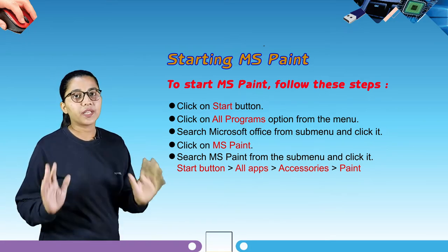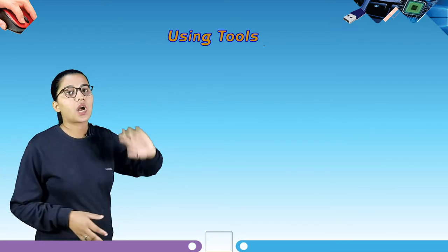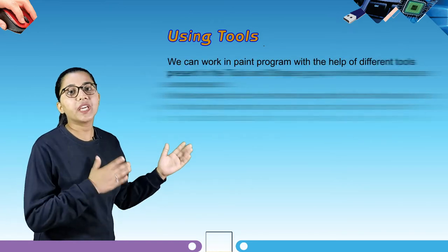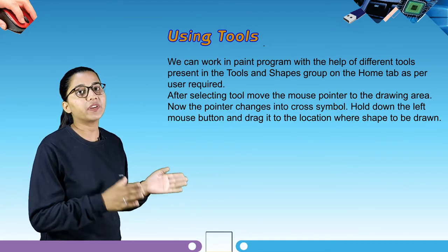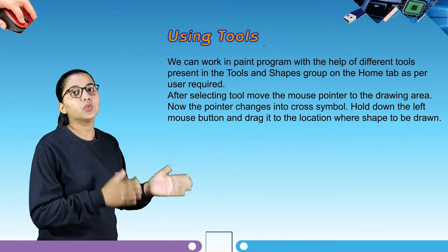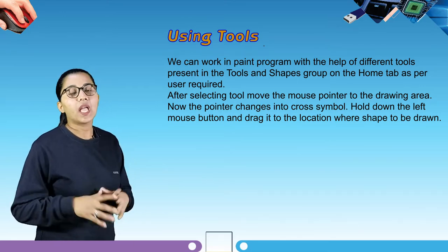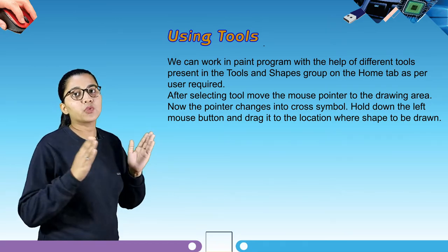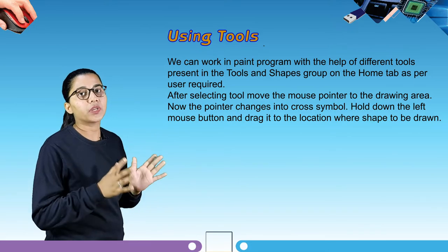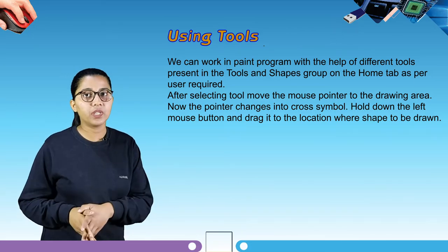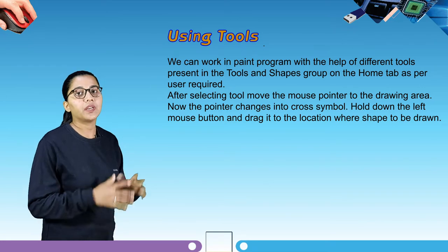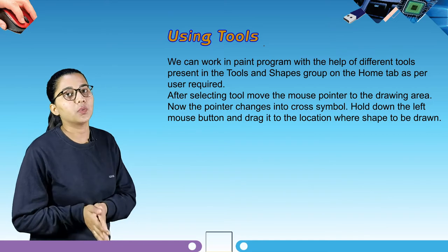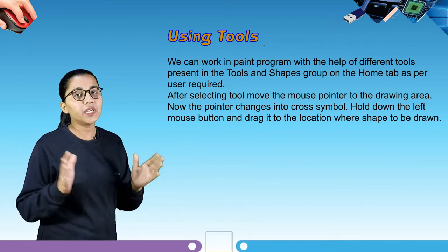Our next topic is using tools. We can work in the Paint program with the help of different tools present in the tools and shape group on the home tab. After selecting a tool, move the mouse pointer to the drawing area. The pointer changes into a cross symbol. Hold down the left mouse button and drag it to the location where the shape is to be drawn.